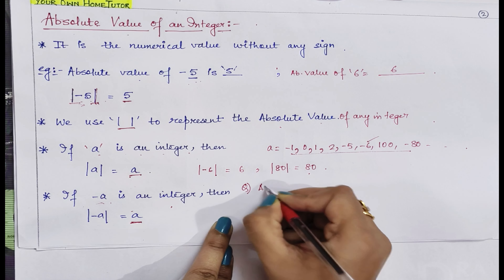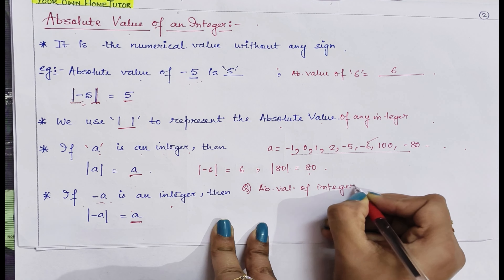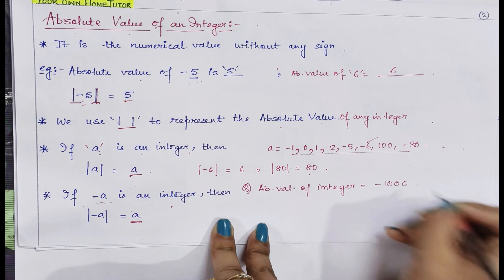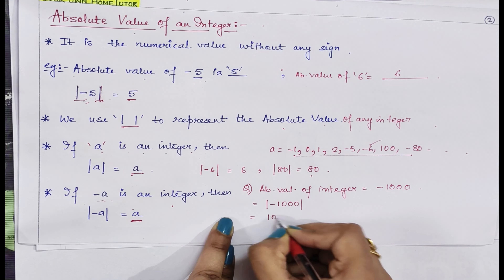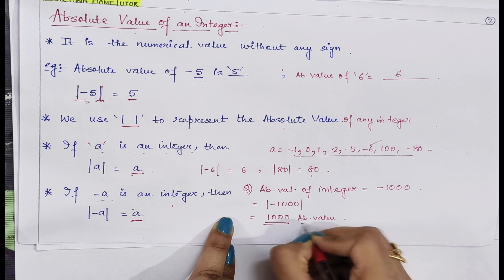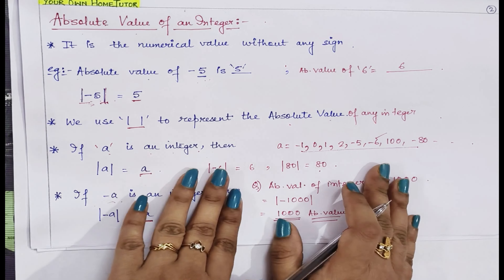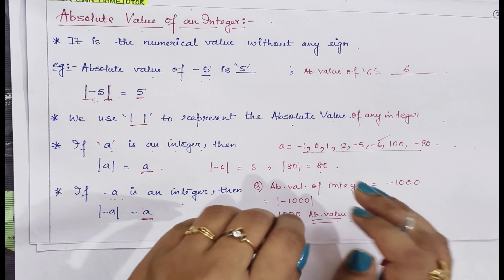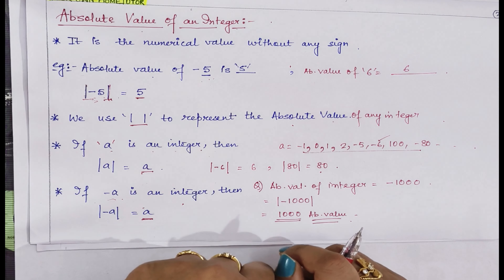Let us work out some more examples. If I tell you the absolute value of the integer 1000, I represent it in modulus: |1000| = 1000. This concept of absolute value will help us in the comparison of integers — how can we compare two or three integers, whether they are positive, negative, or mixed. Next we will be covering comparison of integers.